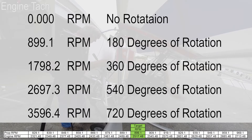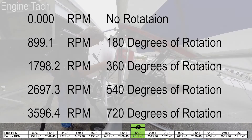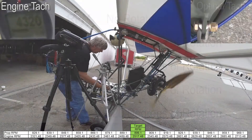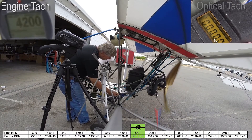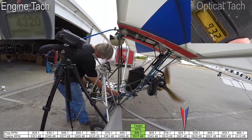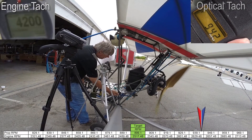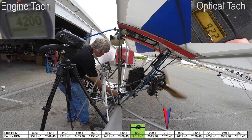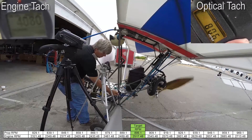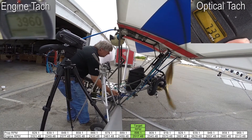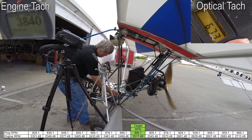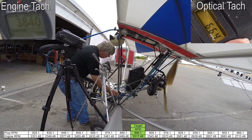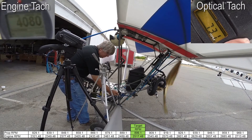899.1 RPM is pretty close to idle for most aircraft. 1798.2 is typically a mag check range. And 2697 — a lot of Continental Lycoming type engines are governed with the propeller governor at 2700 RPM, so this is pretty much a full throttle type of configuration. So we have several reference points that we can use to check the accuracy of our tachometer. Although we can't easily identify the accuracy of the propeller RPM with a video camera in between these specific points, it will give us an indication of whether or not the tachometer is accurate at the specific target settings.